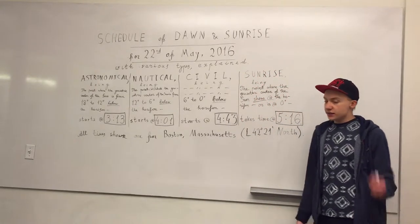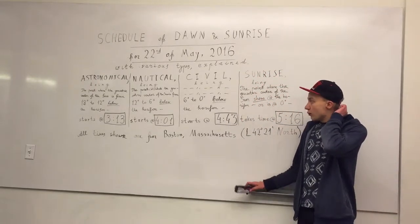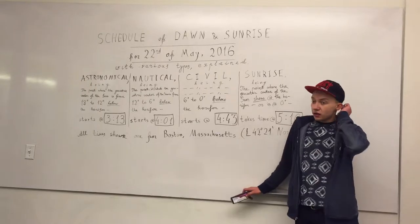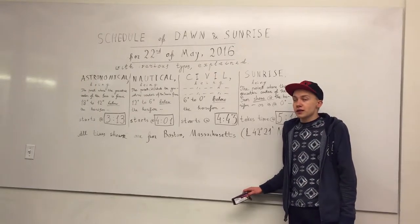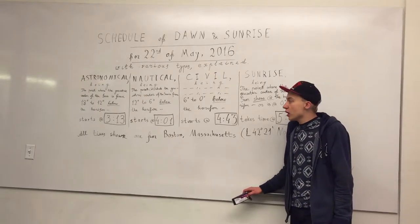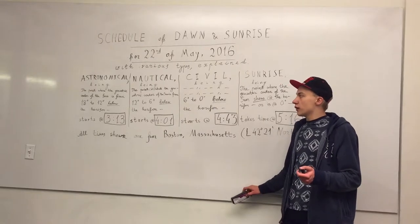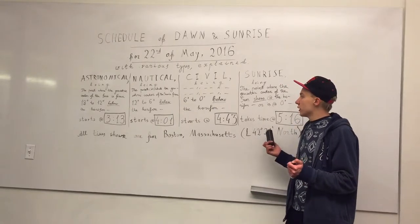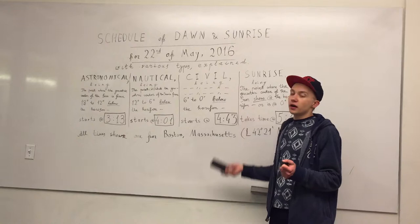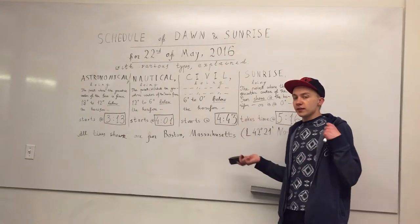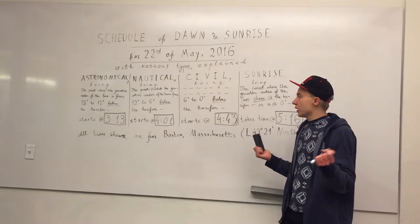Civil twilight is designed mostly for civil and criminal purposes. For example, when you have to figure out when a burglar started — the daytime and nighttime distinction is really important under the law.